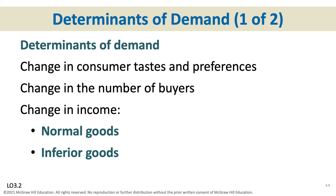Change in the number of buyers: if an industry runs a successful ad campaign — think of the 'Got Milk' campaign, which tried to increase milk consumption for all dairy farmers — that would increase the number of buyers and shift the demand curve to the right, increasing demand. At all possible prices, if the ad campaign was successful, it would increase the quantity demanded.